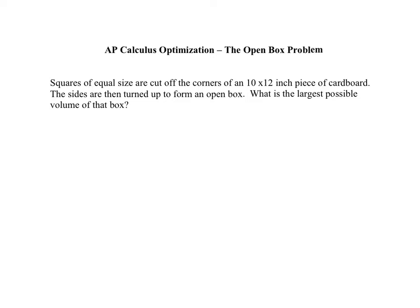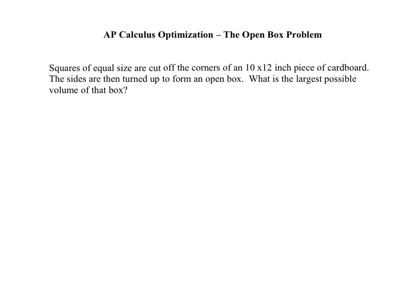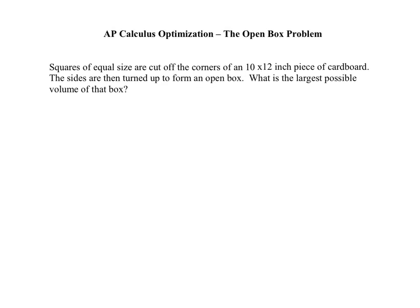And again, it's an open top box because it's easier to set these up so that when we cut out things, they open up and we don't have to worry about the top of it. If we did have a top, it would be a little bit more difficult. But anyway, we have squares of equal size cut off the corners of a 10 by 12 inch piece of cardboard. Then the sides are turned up to form an open top box. What is the largest possible volume of that box?